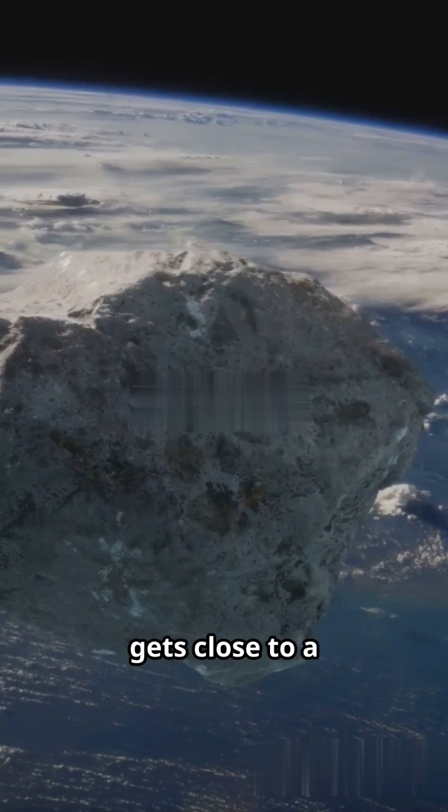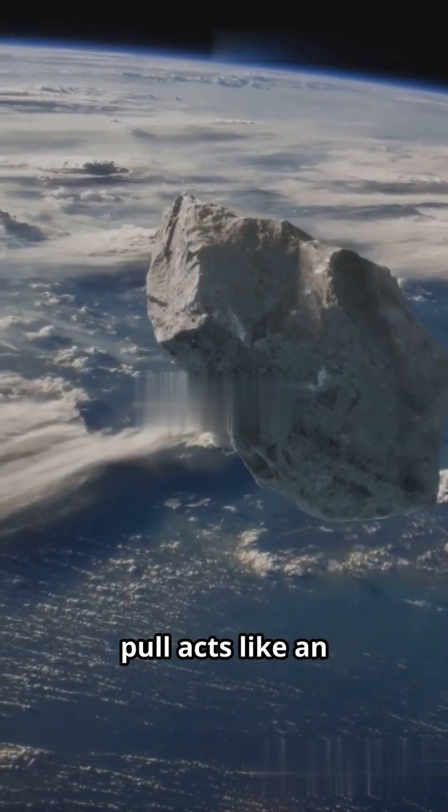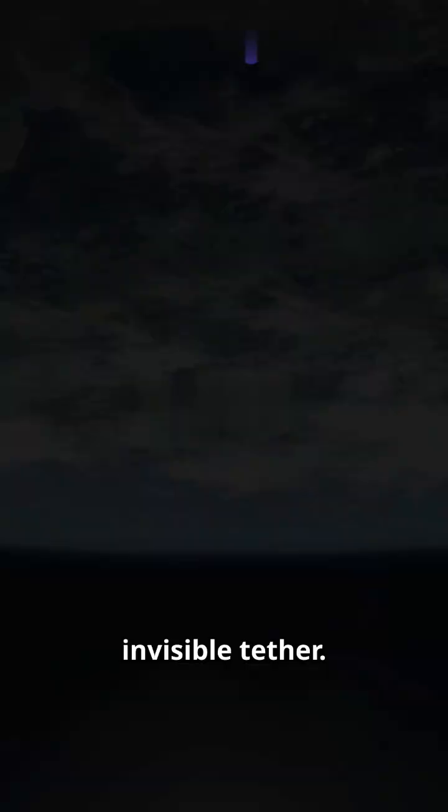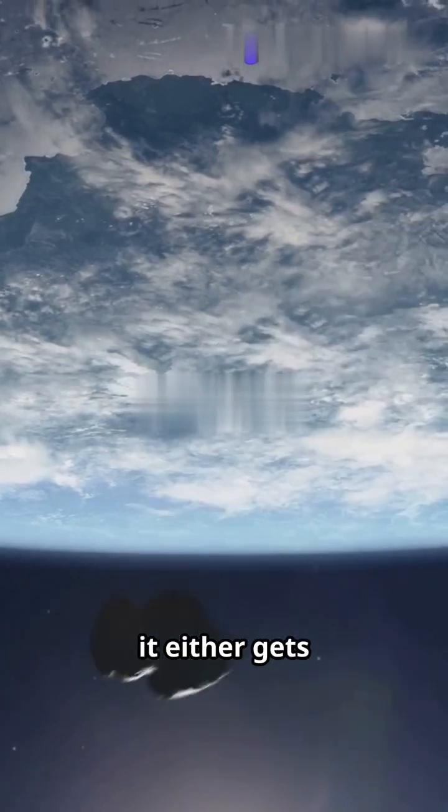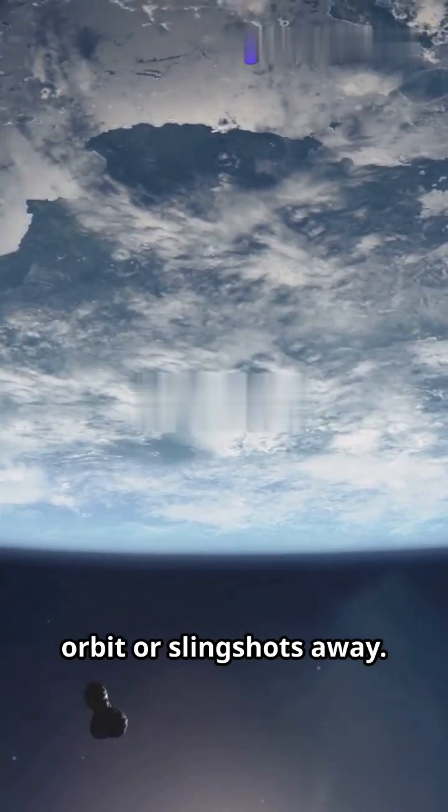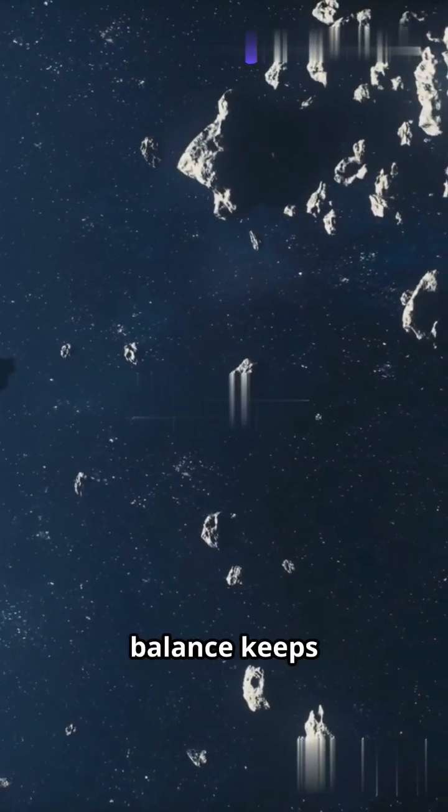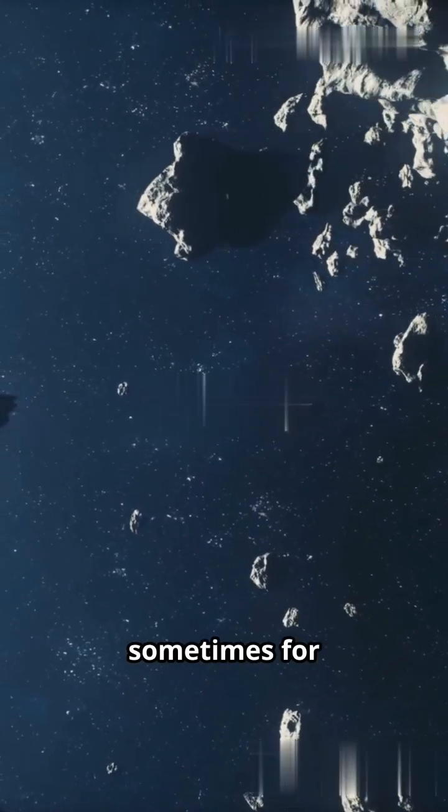When an asteroid gets close to a planet or star, the gravitational pull acts like an invisible tether. Depending on its speed and angle, it either gets captured into an orbit or slingshots away. This delicate balance keeps asteroids floating, sometimes for millions of years.